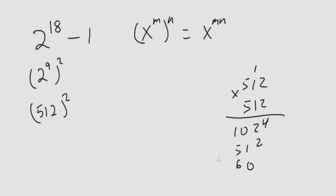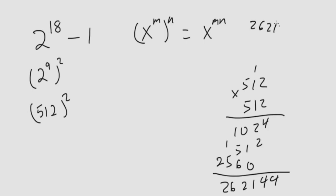There's 25 over here. This comes out to be 4, 4, 1, 12, 6, 2. So this is 2, 6, 2, 1, 4, 4 minus 1 is equal to 2, 6, 2, 1, 4, 3. We can do it that way.